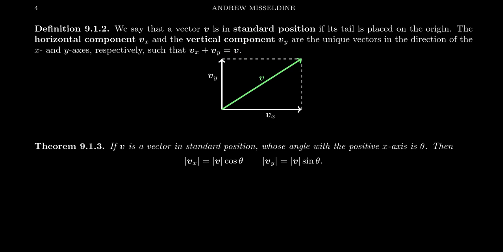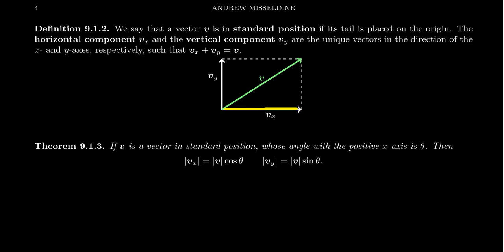By the parallelogram rule, we have vx and vy. If we were to copy vx and copy vy, we form a parallelogram. Because vx and vy are actually perpendicular to each other, this parallelogram turns out to be a rectangle. The parallelogram rule still applies — v is the diagonal of this parallelogram, and therefore it's the sum. So this gives us the vertical and horizontal components of a vector.